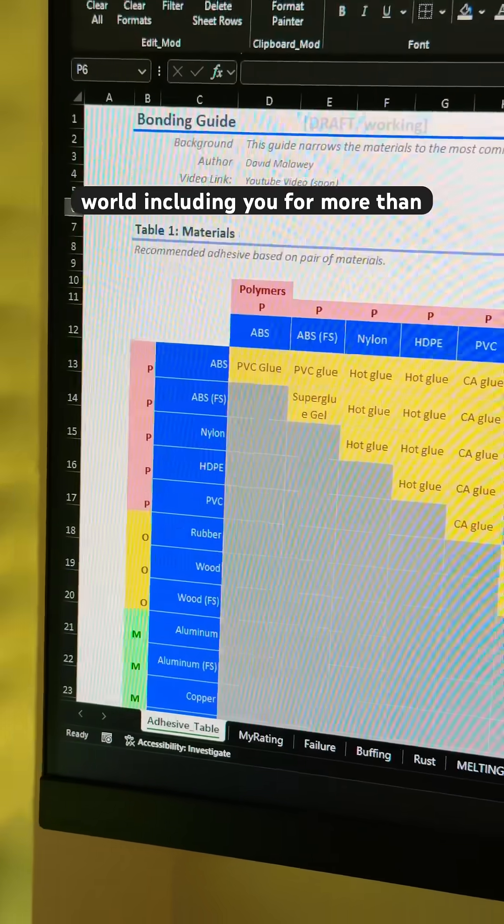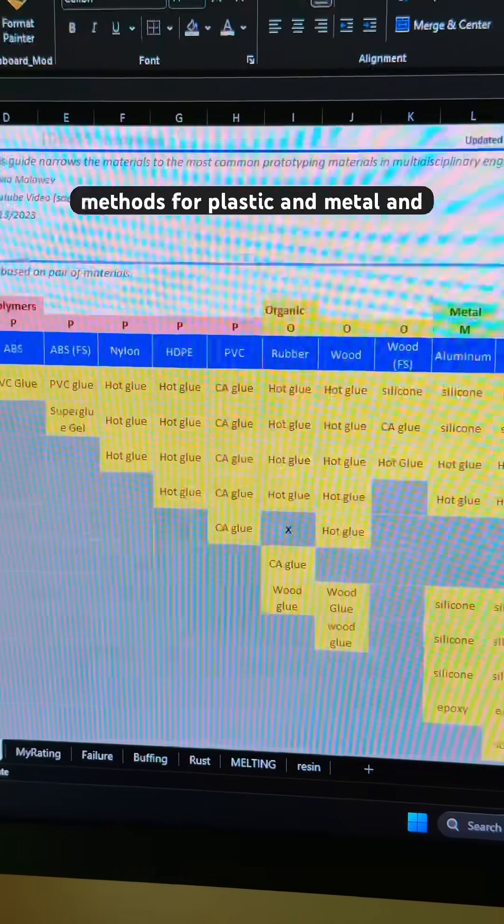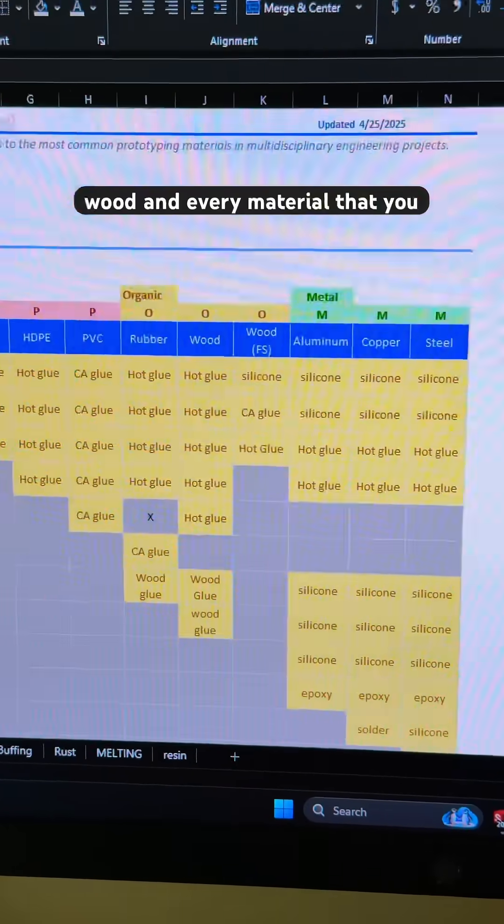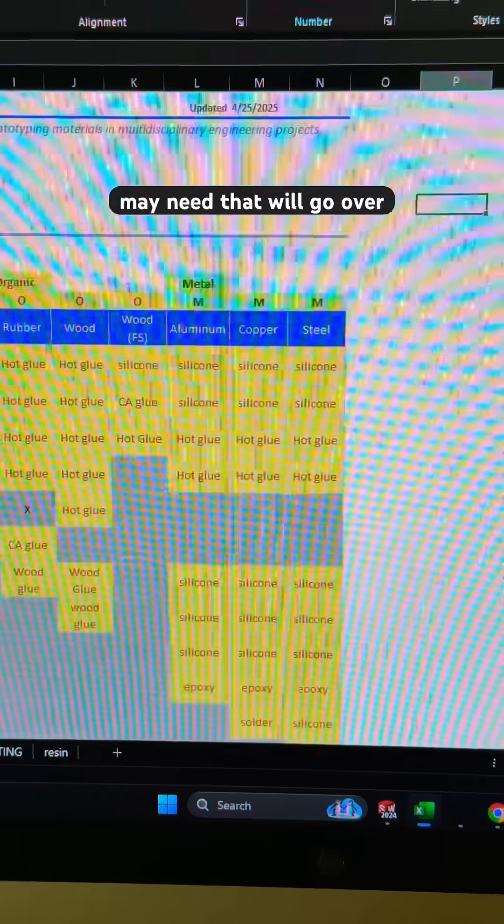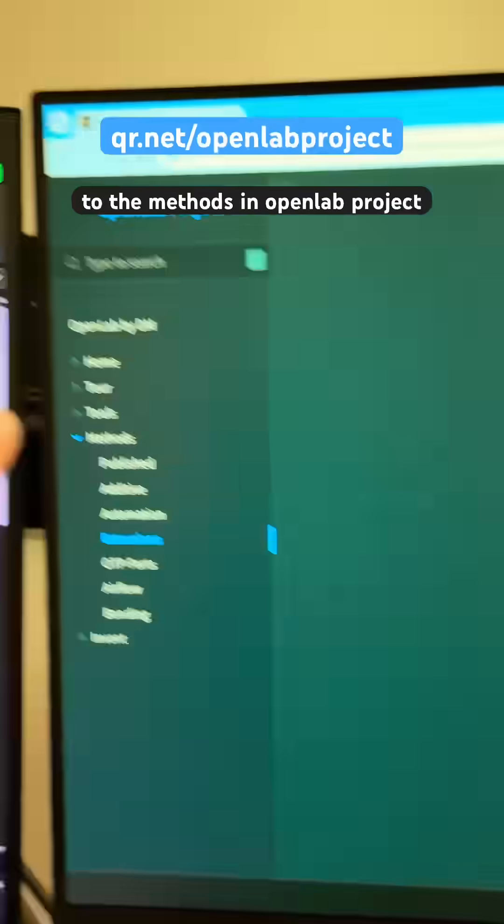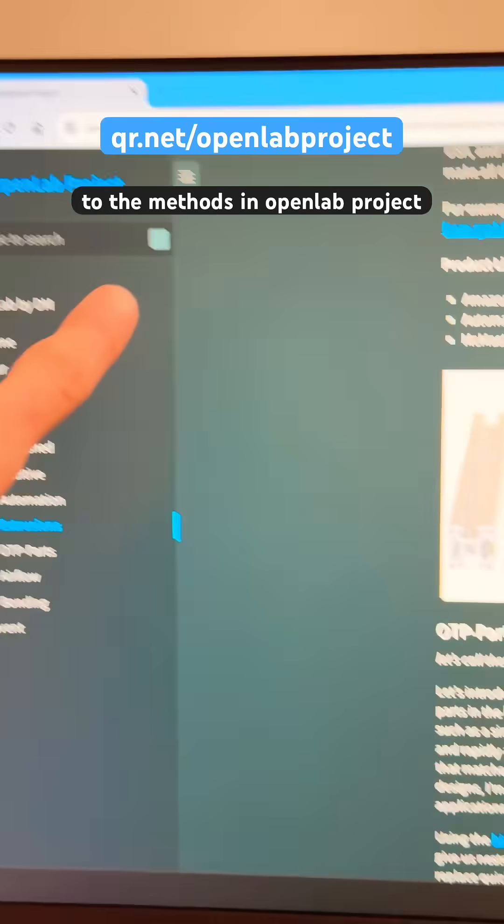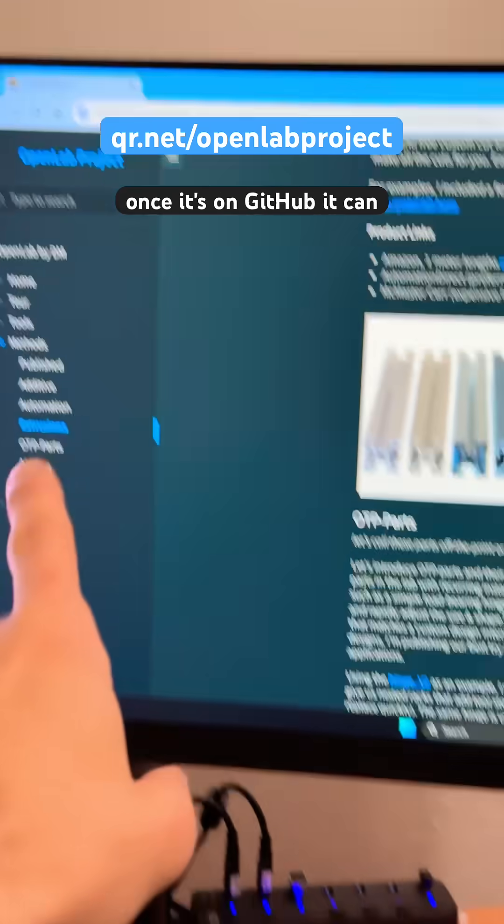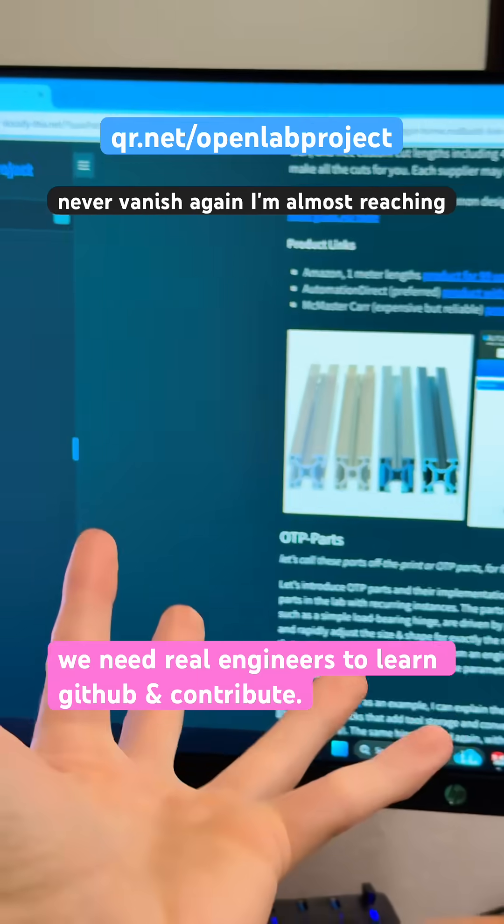For more than five years, I've been developing these methods for plastic and metal and wood and every material that you may need that will go over to the methods in OpenLab project. So this is all easy, and once it's on GitHub, it can never vanish again.